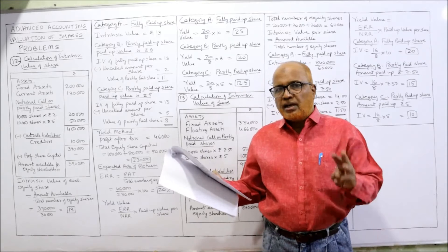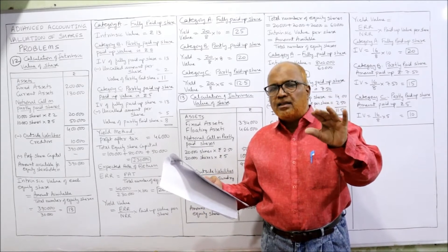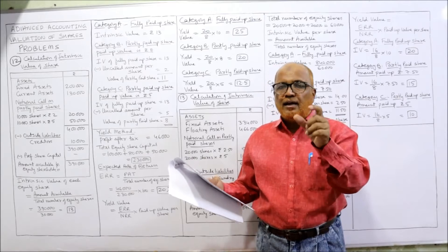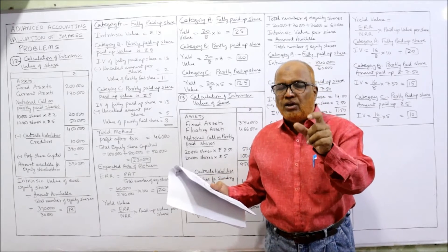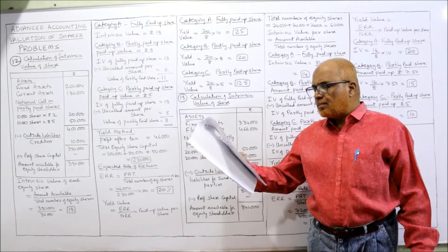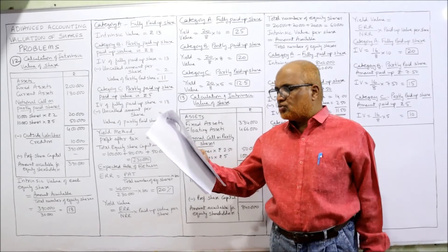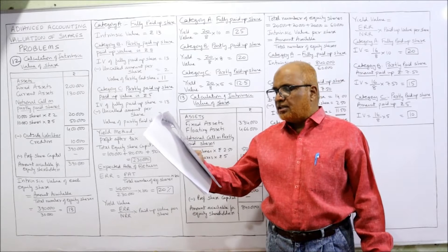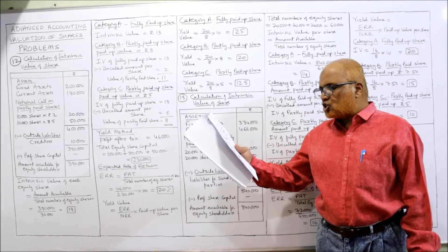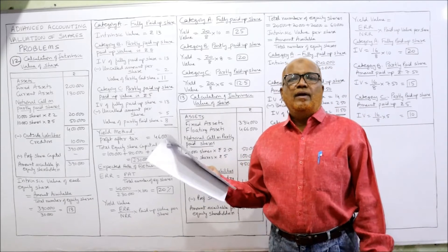So the three classes of shares are: first, 10,000 fully called and paid up; second, 10,000 shares with 8 rupees called up; third, 10,000 shares with 5 rupees called and paid up. Reserves and surplus: reserves 40,000, P&L account 60,000. The normal average profit after tax will be maintained at 46,000 and the normal rate of return (NRR) is 8%.